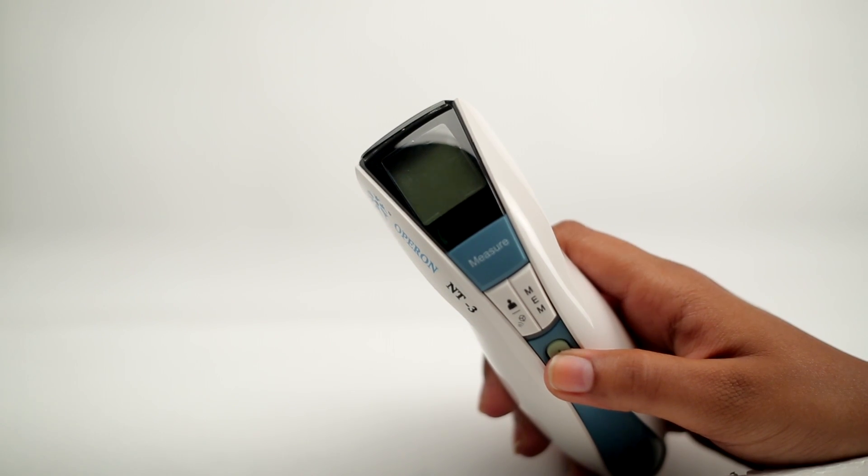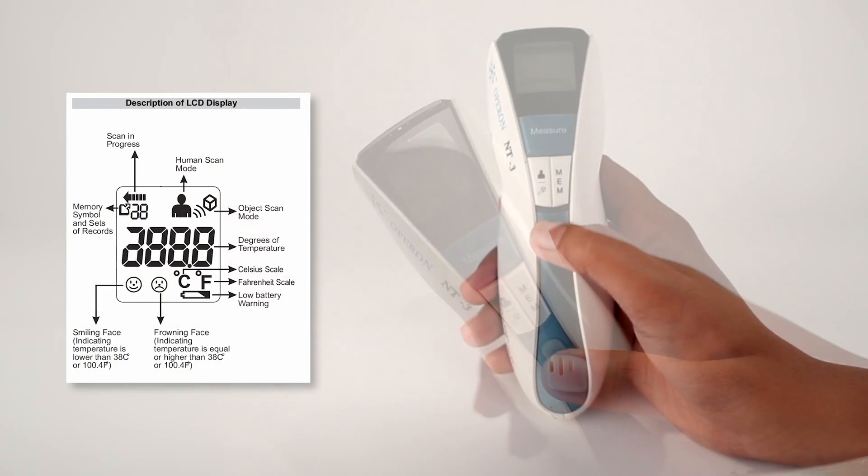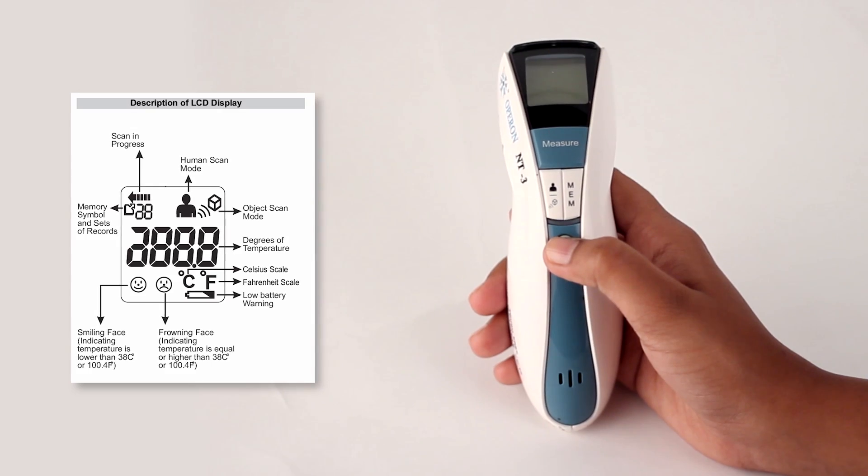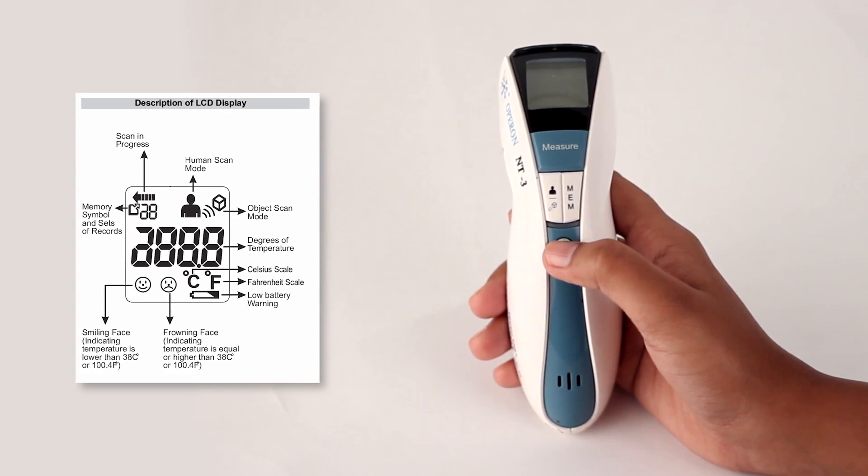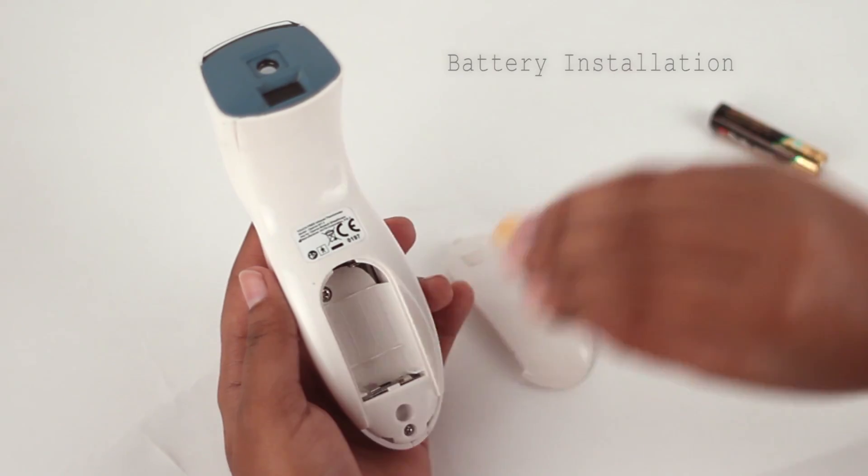Operon NT3 Thermometer offers Celsius to Fahrenheit switchable function, object and body temperature measurement, fever alarm and lots of such features and benefits. Let's get started.